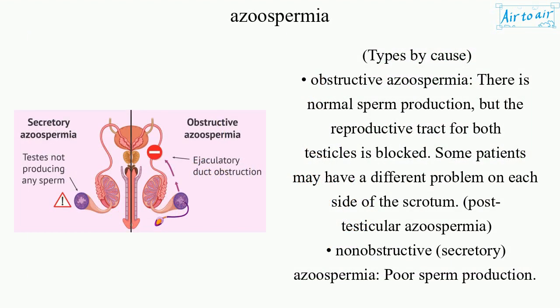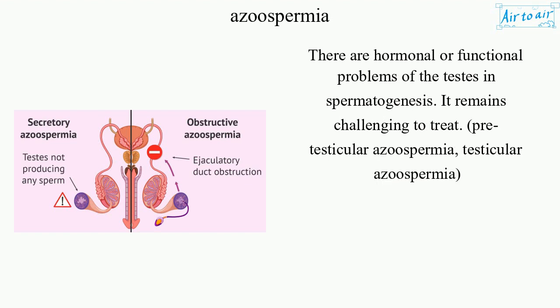Types by cause: Obstructive azoospermia involves normal sperm production, but the reproductive tract for both testicles is blocked. Some patients may have a different problem on each side of the scrotum. Non-obstructive azoospermia, also called secretory azoospermia, involves poor sperm production due to hormonal or functional problems of the testes in spermatogenesis. It remains challenging to treat. This includes pre-testicular and testicular azoospermia.